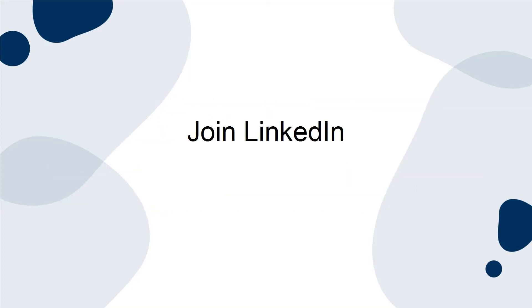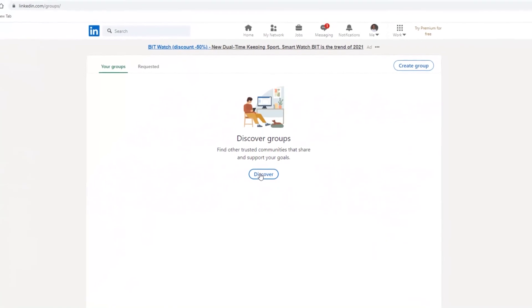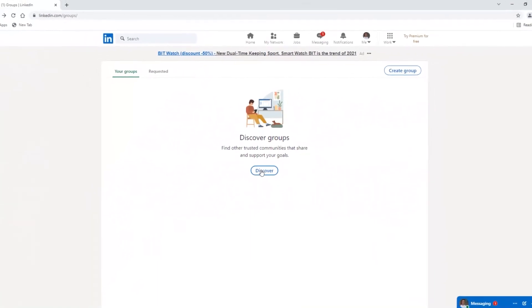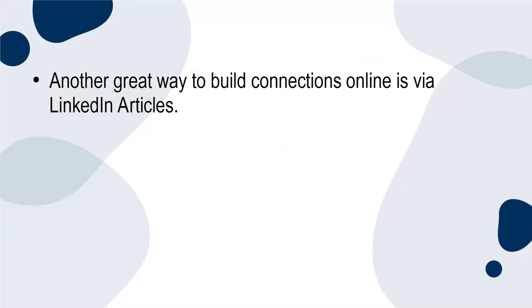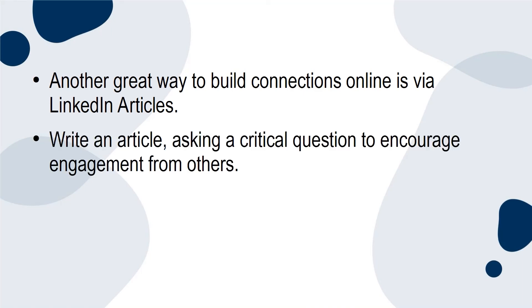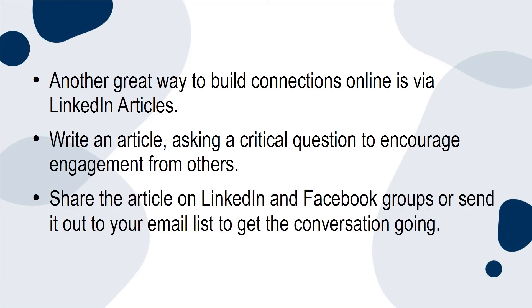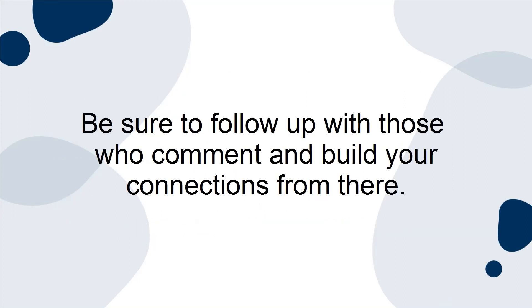Join LinkedIn. One great way to branch out with new clients and relationships online is through LinkedIn groups. This will allow you to connect with a target audience, as well as expand your knowledge and converse with others in your industry. Another great way to build connections online is via LinkedIn articles — write an article asking a critical question to encourage engagement. Share the article on LinkedIn and Facebook groups or send it out to your email list to get the conversation going. Be sure to follow up with those who comment and build your connections from there.